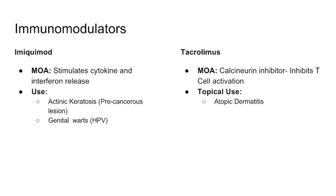Next is immunomodulators — medications that modulate immune function. The first is imiquimod, which stimulates cytokine and interferon release. It's used for actinic keratosis (a precancerous squamous cell lesion) and genital warts (mainly HPV). The high yield point: imiquimod is used for genital warts. The second is tacrolimus, a calcineurin inhibitor that inhibits T-cell activation. It's used for atopic dermatitis, which is thought to be T-cell mediated.